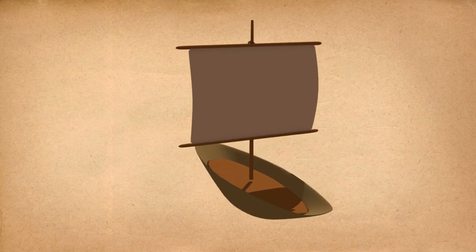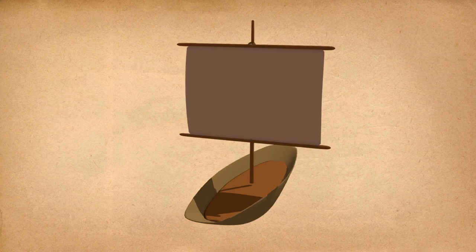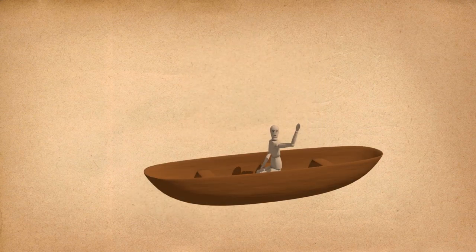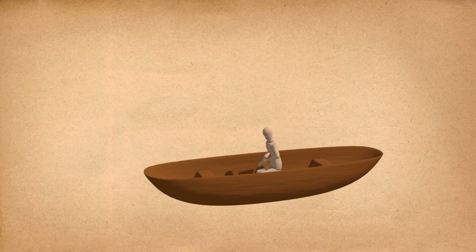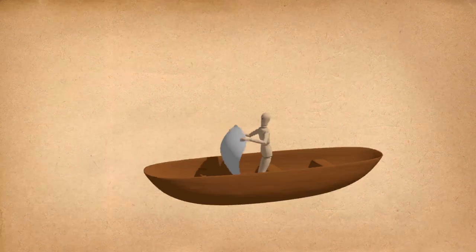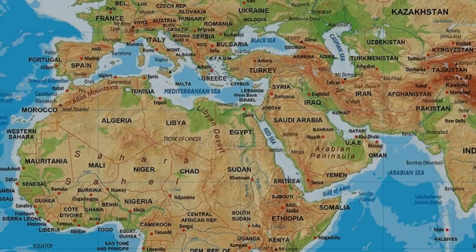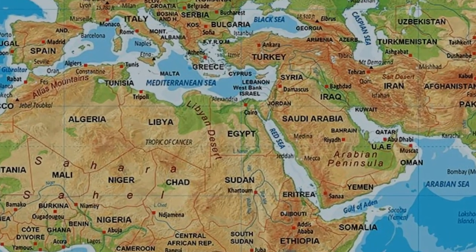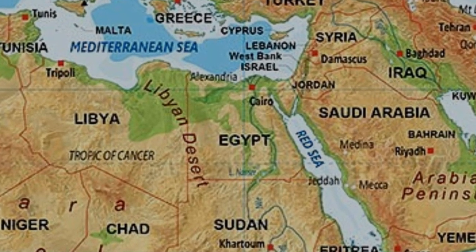We don't know for sure where and when first sailing boats appeared. The fact that wind could be used for moving boats was probably discovered by someone who spread a large piece of material in it. It could have been on the river Nile in Egypt, where strong winds blow quite often.